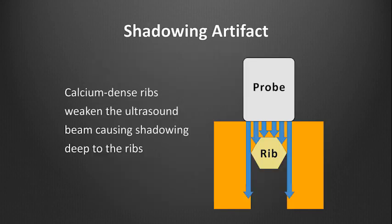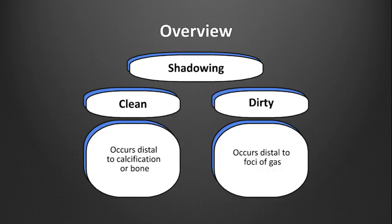Shadowing is caused by absorption of the ultrasound beam by a dense object in its direct path. In this cartoon, a rib blocks the ultrasound beams from penetrating deeper in the tissue, resulting in an area of darkness on the screen. Shadowing artifact can be described as clean or dirty, and we will show examples of both.